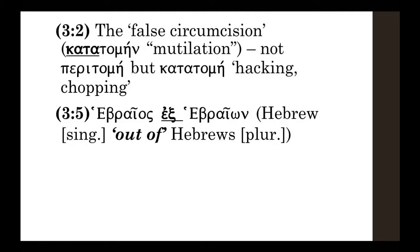Here's another example of the preposition ek. Paul is referring to his heritage and lineage, and he refers to himself as a Hebraios ex Hebraion — literally 'a Hebrew out of Hebrews,' plural form. He's showing the purity of his lineage: both mother and father are pure Hebrew, so 'I am a Hebrew out of Hebrews.'